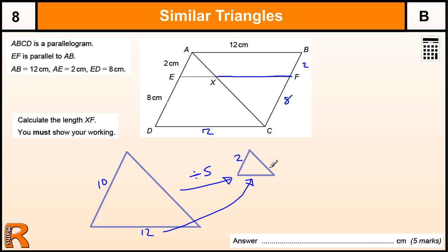So, to find this base length we need to do 12 divided by 5. 5 goes into 12 twice with 2 left over so 2 fifths which is 0.4 so 2.4.